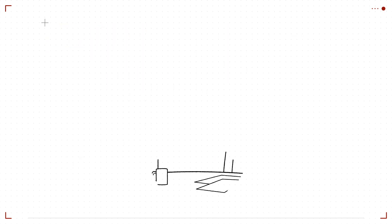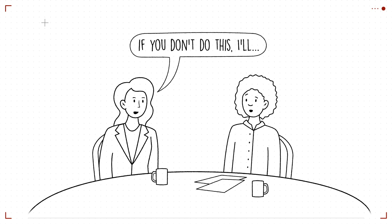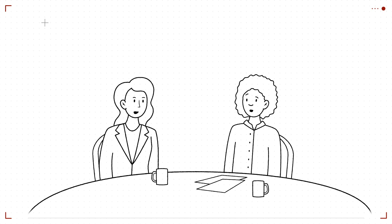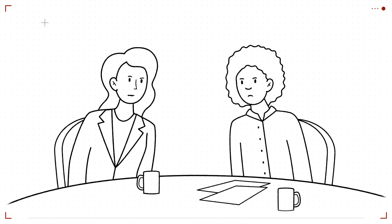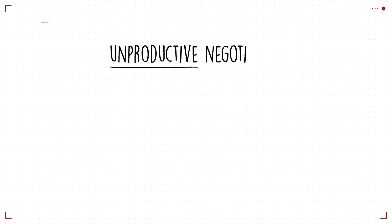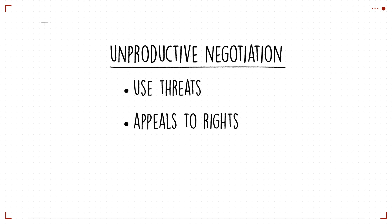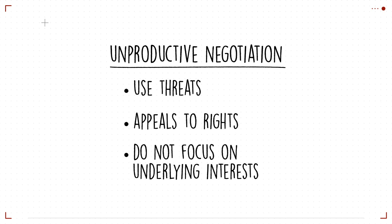Disputes or rejected claims are inevitable, but there is a way to manage them effectively. Research finds that people tend to reciprocate negative behaviors like threats to a much greater extent than positive strategies causing conflicts to escalate rapidly. In an unproductive negotiation, people use a lot of threats and appeals to their rights and don't focus as much on their underlying interests.